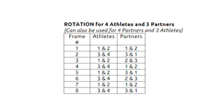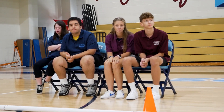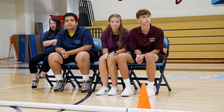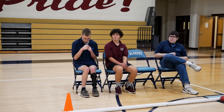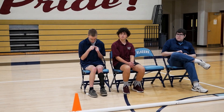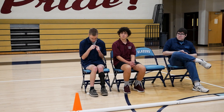In this first example, we will show how you can rotate when you have four athletes and three partners, or four partners and three athletes available for a match. Every game will start frame one with two athletes and two partners on one end of the court. The other members of the team will be sitting at the chairs on the opposite end of the court, waiting for their turn to play in frame two.